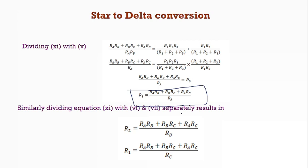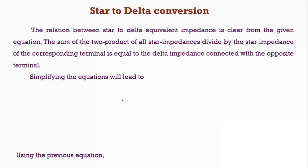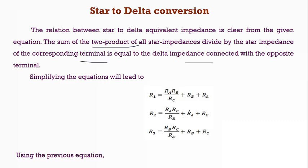Similarly, if I divide by RB, I will be getting R2. If I divide by RC, I will be getting R1 resistance. So actually, the delta impedance connected with opposite polarity will be equivalent to that of the sum of product of the star impedances divided by the star impedance of that corresponding terminal.